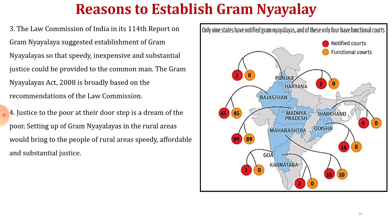Justice to the poor at their doorstep is a dream of the poor. Setting up Gram Nyayalayas in rural areas would bring to the people of rural areas speedy, affordable and substantial justice. If you look at the figure, 9 states have notified Gram Nyayalayas. There are 2 categories: red shows the notified courts and orange shows the functional courts. Right now, Rajasthan, Madhya Pradesh, Maharashtra, and Odisha are having functional courts, whereas others have only notified courts.